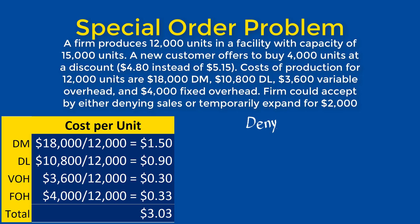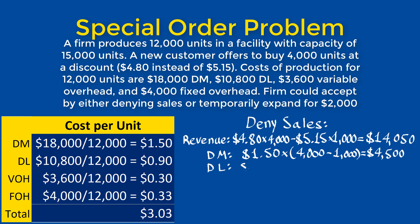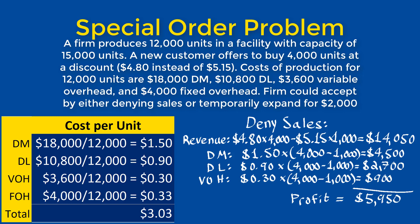We can now examine the two alternatives, beginning with the option to deny sales to existing customers to accommodate the new customer. The total revenue will be $14,050. The direct material expense would be $4,500, the direct labor expense will be $2,700, and the variable overhead expense will be $900, giving us a total profit of $5,950.